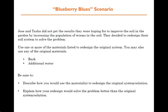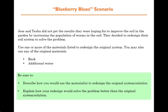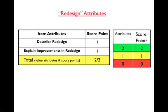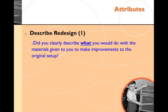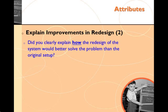They decided to redesign their soil system to solve the problem. You're prompted to use one or more of the listed materials — bark or additional water, or both — to make a change to the original system. You must describe how you would use the materials to redesign the system and then explain how your redesign would solve the problem better than the original. The two key attributes are: did you describe the redesign, and did you explain how your suggestion is better than the original?